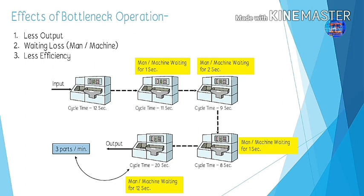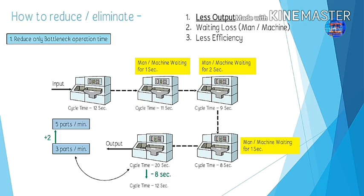To get maximum output, simply reduce the bottleneck operation time. For example, if we reduce the last machine's cycle time from 20 seconds to 12 seconds, the output automatically increases by 2 parts per minute — from 3 to 5 parts per minute. So by doing just one thing — reducing the bottleneck operation time — the first effect of less output is resolved.